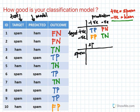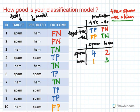Let's count. True positive: we have one, two, three, four. False negative: we have two. False positive: we have one. True negative: we have one, two, three. So this is our confusion matrix — TP=4, FN=2, FP=1, TN=3.